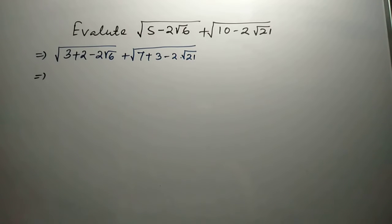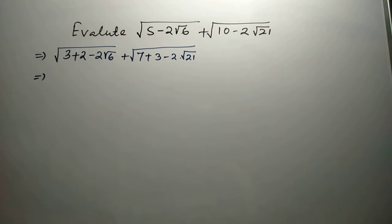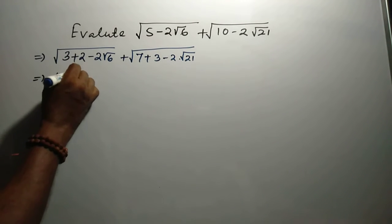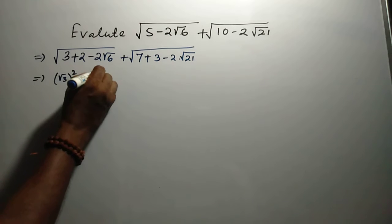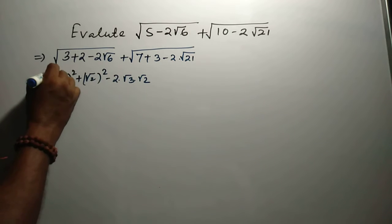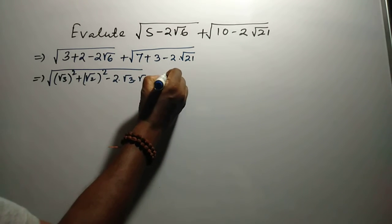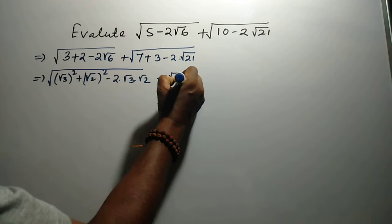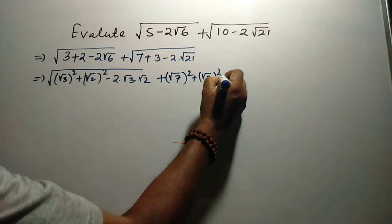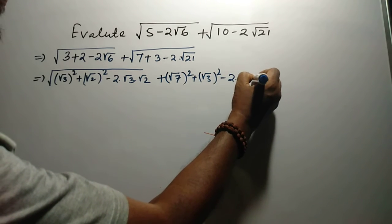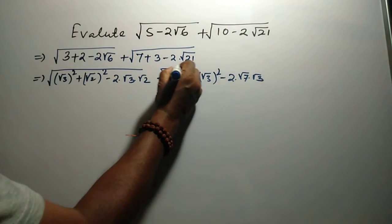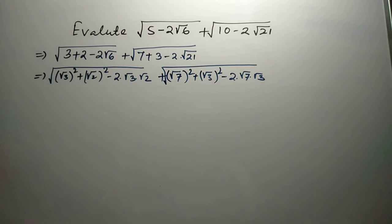Applying the identity A² + B² - 2AB = (A - B)²: the first term gives √(√3² + √2² - 2·√3·√2), and the second term gives √(√7² + √3² - 2·√7·√3), both fitting the (A - B)² form.